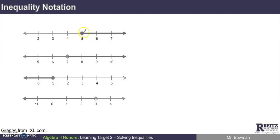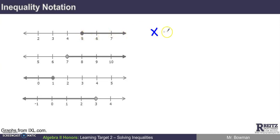This inequality expresses that we should include all the numbers greater than 5, and also include 5 itself, indicated by the filled-in dot. In inequality notation, you pick a variable — we usually use x — and write the set of all values you could replace x with to make it a true inequality statement. So x is greater than or equal to 5. Any value in the shaded part, like 6, 7.2, 5.01, or even 5 itself, will solve this inequality.